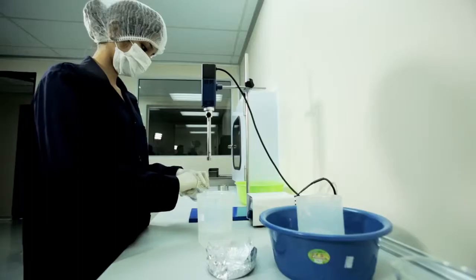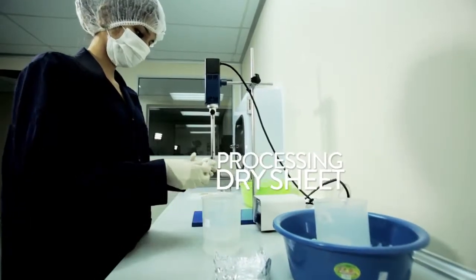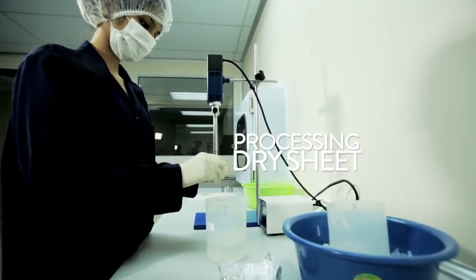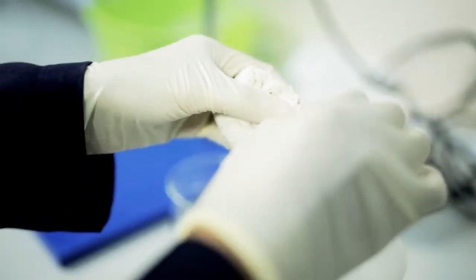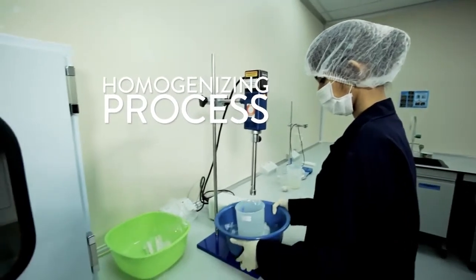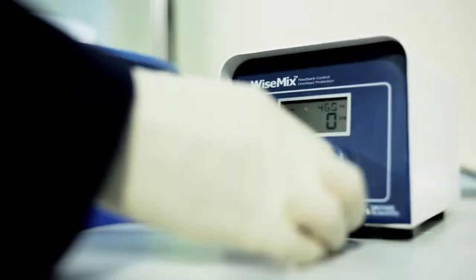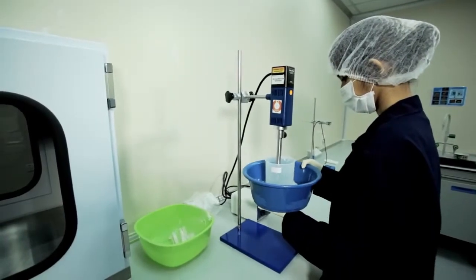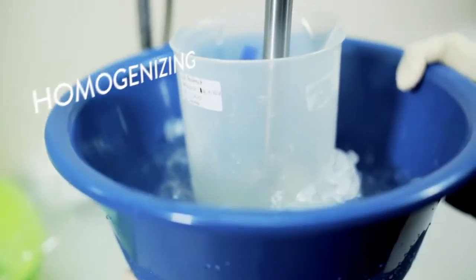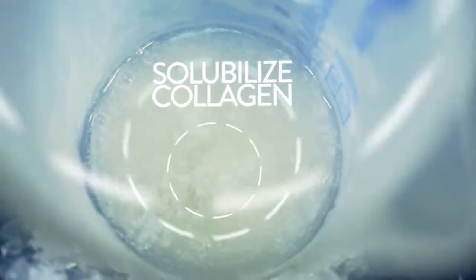For the dry sheet collagen dressing, the bovine tendon is first cut into small pieces and ground into minced tissue. These minced tissues are carefully separated into small strips and treated with enzyme and other chemicals. This process results in a solubilized collagen mixture, which can then be used to make the dry sheets of dressing.